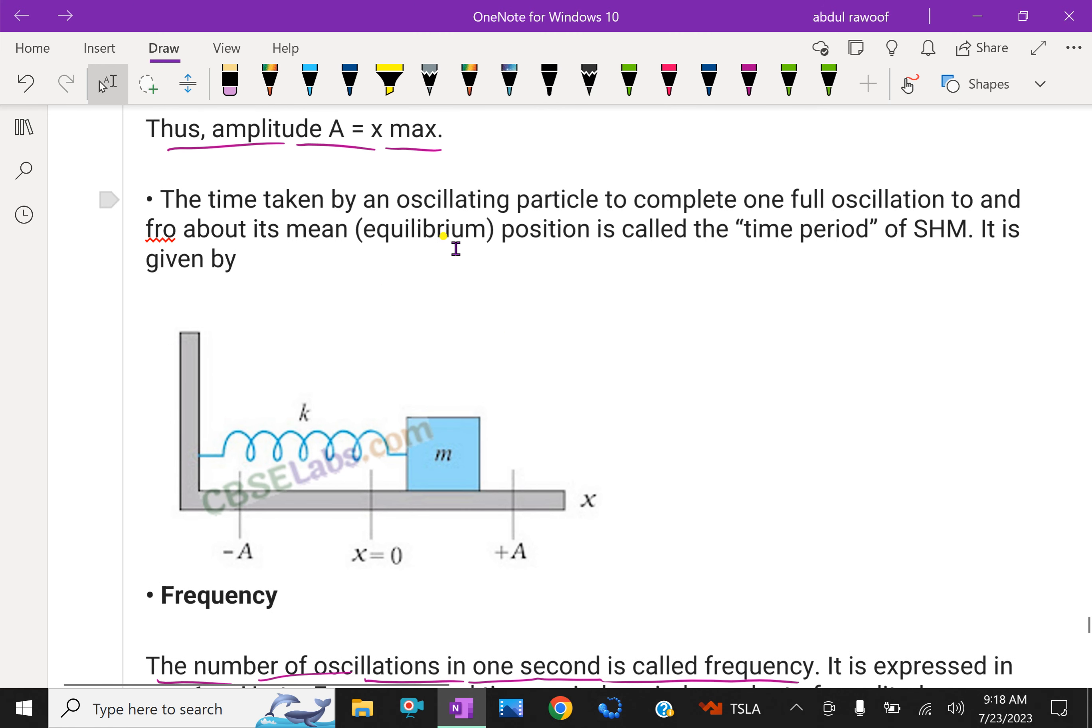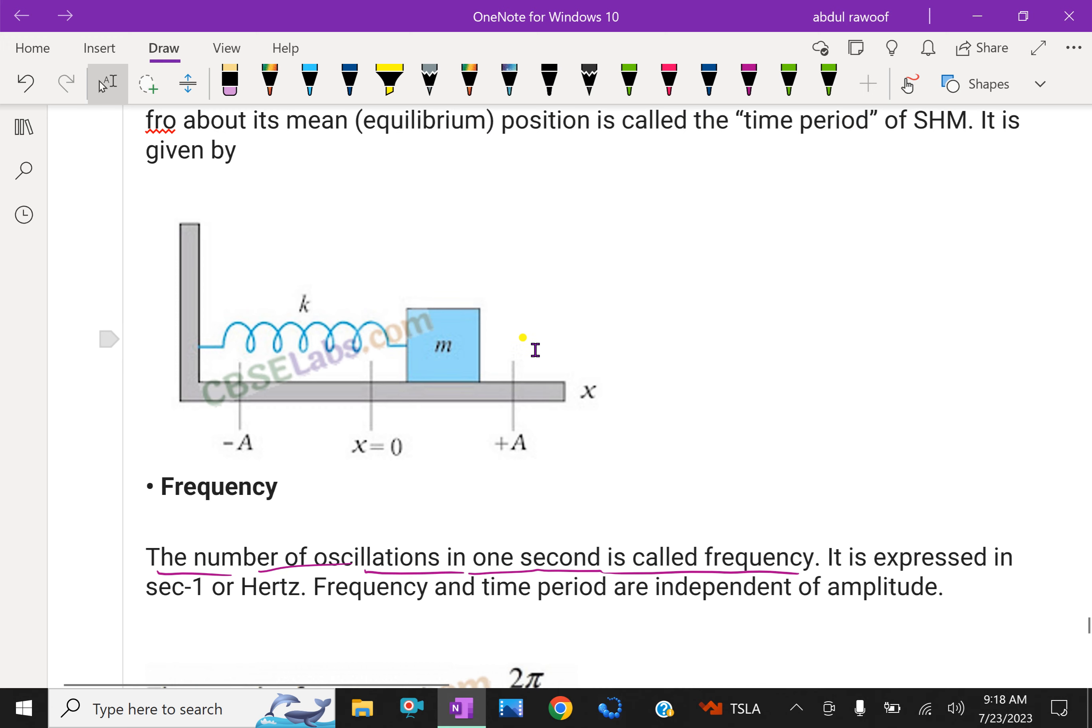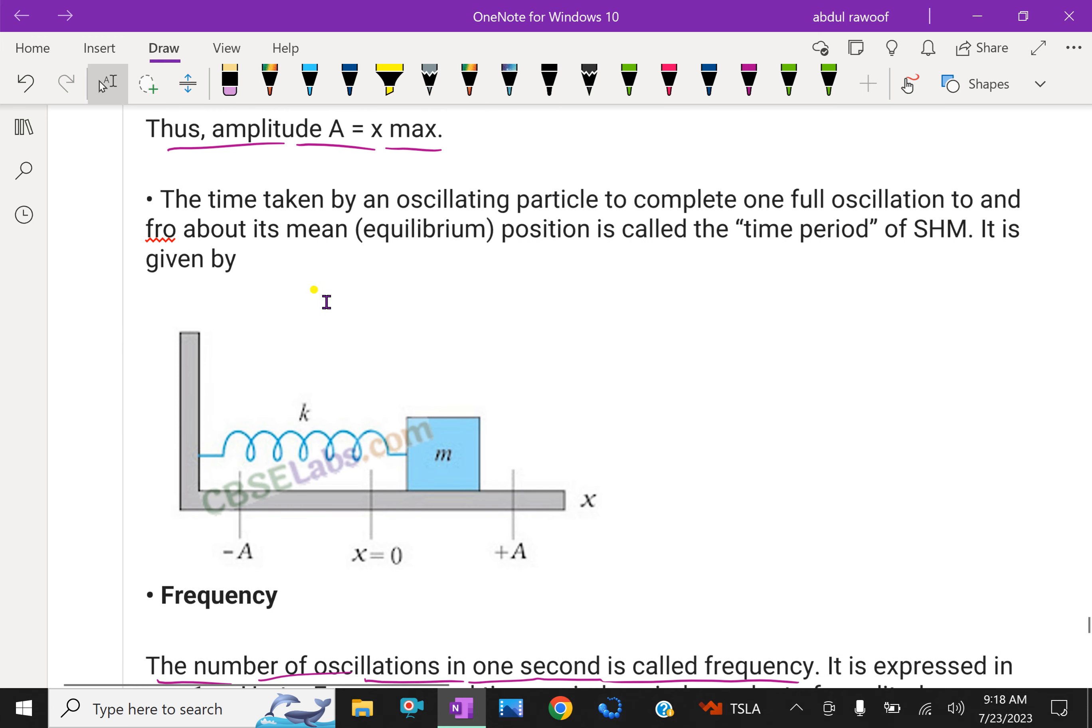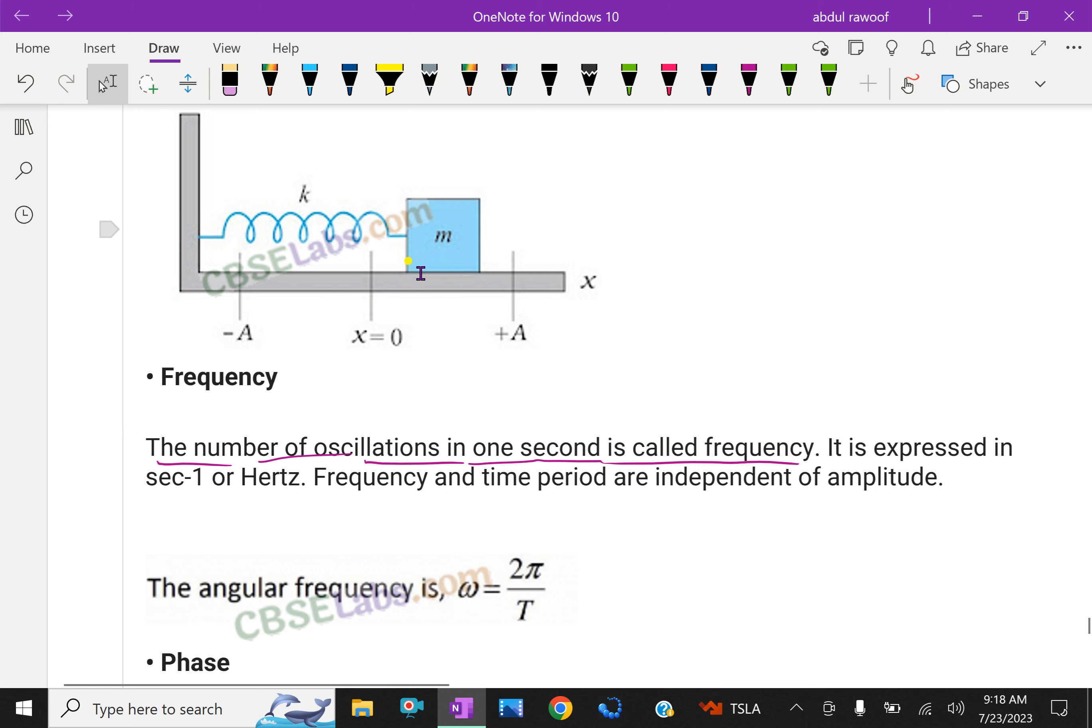The time taken by an oscillating particle to complete one full oscillation to and fro about its mean equilibrium position is called the time period. It is given by the function time T. Here is another model: this mass is sitting on a horizontal plane and one end is fixed with spring with spring constant k and oscillates horizontally. The negative position of -A and the positive position of +A together form an amplitude. X = 0 is the mean position.